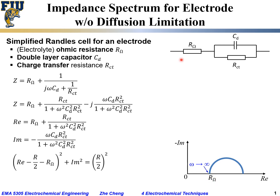On the other hand, when ω goes towards zero (near DC, very low frequency), the denominator becomes one and the real part becomes R_ohm + R_ct. The imaginary part numerator goes to zero, so the low-frequency intercept is R_ohm + R_ct.